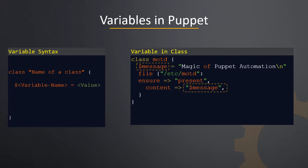Variable names are case sensitive and can include lower case or upper case letters, numbers, and underscores in Puppet. Let us check this Puppet code where we have defined a $Message variable with the value 'magic of Puppet automation' and have then used the same with the content attribute. The rest of the process will be the same.